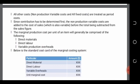The elements of cost are materials, labor, and overheads. Overheads represent all indirect costs — be it indirect materials, indirect labor, and indirect expenses. They are collectively known as overheads.